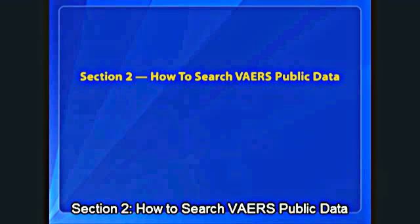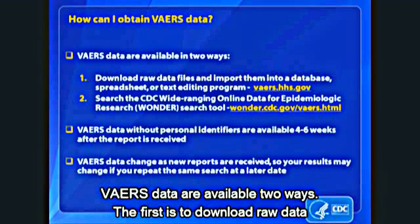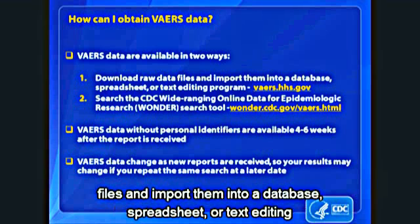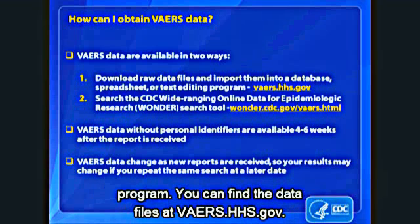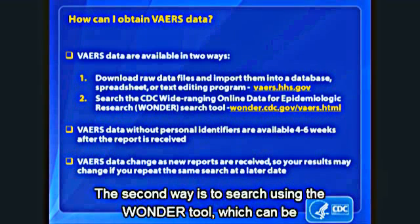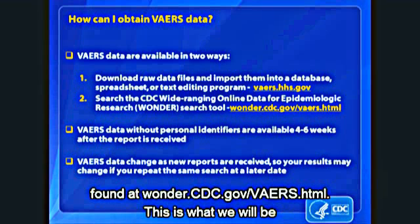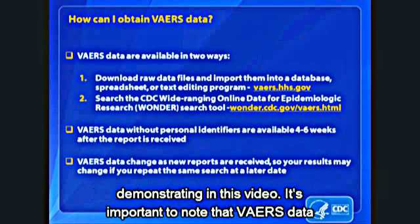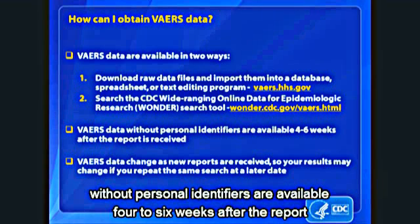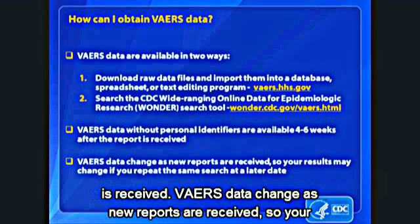Section 2: How to Search VAERS Public Data. VAERS data are available two ways. The first is to download raw data files and import them into a database, spreadsheet, or text editing program. You can find the data files at VAERS.hhs.gov. The second way is to search using the Wonder tool, which can be found at wonder.cdc.gov/vaers.html. This is what we will be demonstrating in this video. It's important to note that VAERS data, without personal identifiers, are available four to six weeks after the report is received.